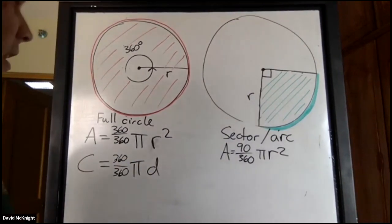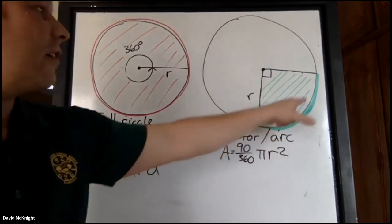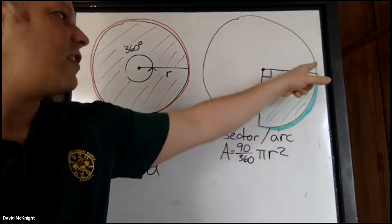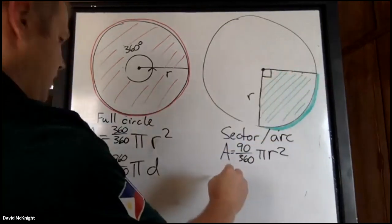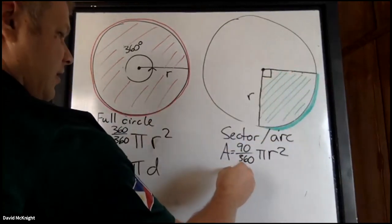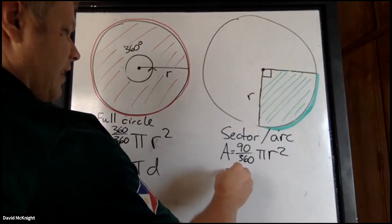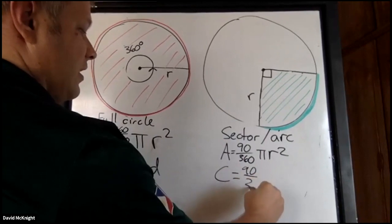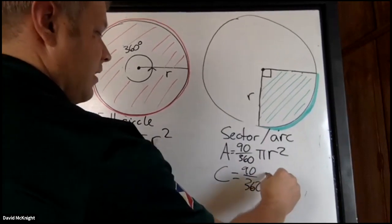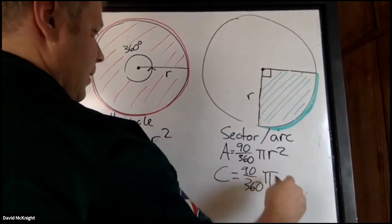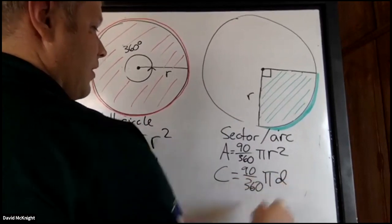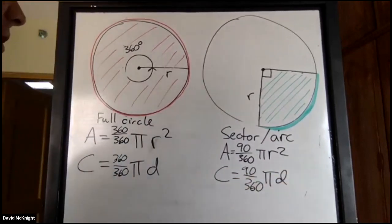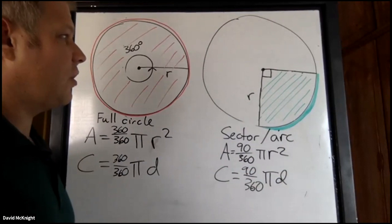For an arc, so what is the length of this arc if it's at 90 degrees? In this case, the circumference or arc length is equal to 90 over 360. That's the fraction. Times π times the diameter, which is double the radius. All right, that should get you going.